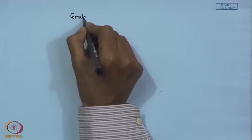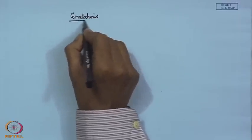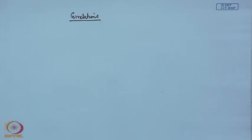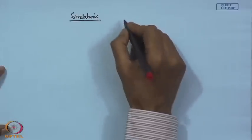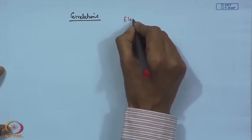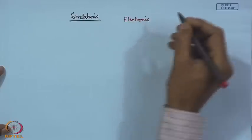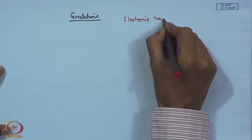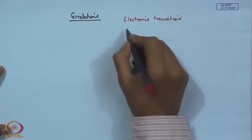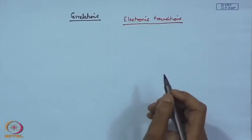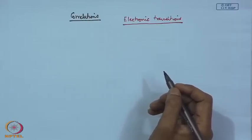Good evening everybody. Welcome back to the diagrams where we are talking about different electronic transitions. Basically we are talking about different types of correlations and how these correlations are helpful in identifying several of these electronic transitions. We have talked about these in terms of the different Russell-Saunders terms and those particular terms which were involved for all these transitions.